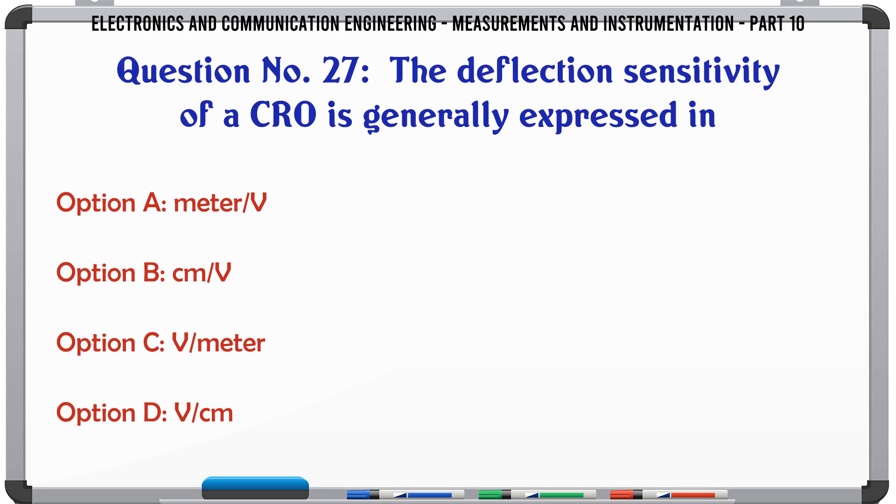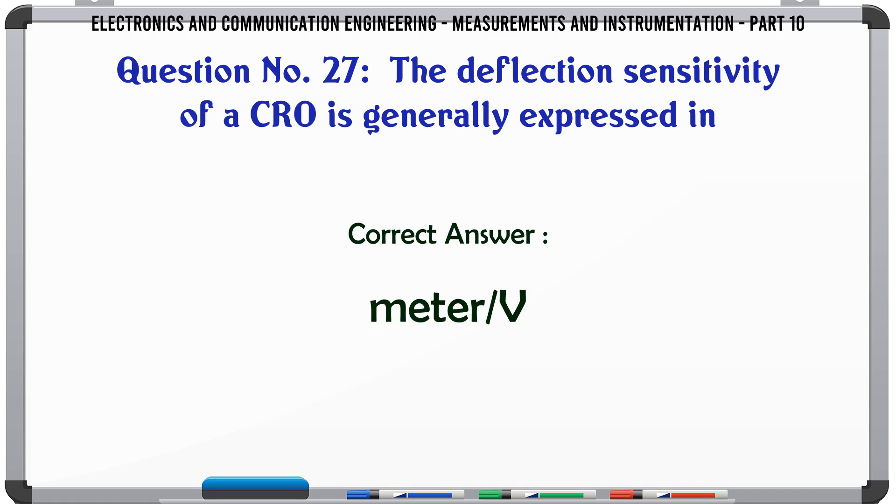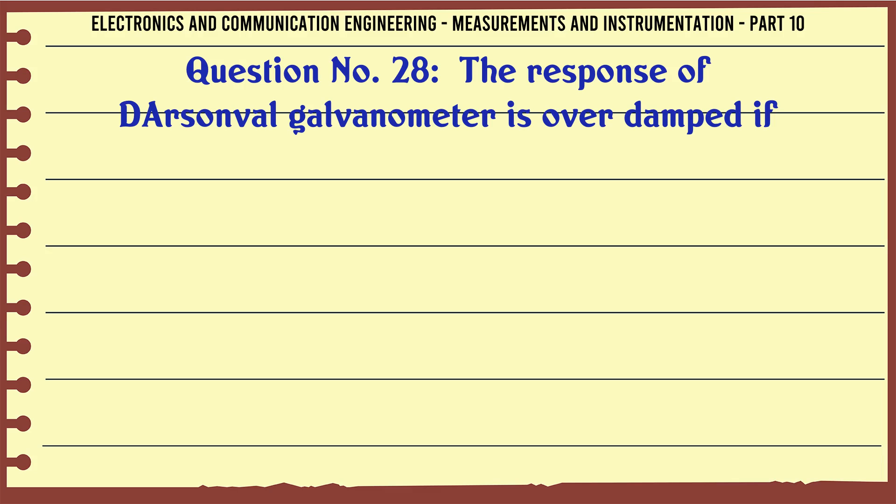The deflection sensitivity of a CRO is generally expressed in: A) meter/V, B) cm/V, C) V/meter, D) V/cm. The correct answer is meter/V.